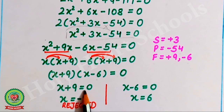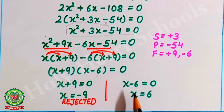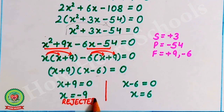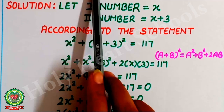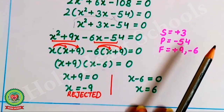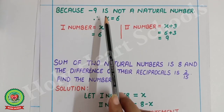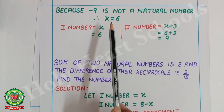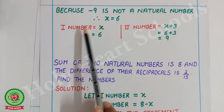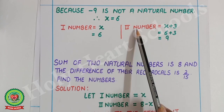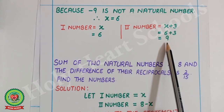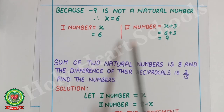So (x plus 9)(x minus 6) equals 0, giving x equals minus 9 or x equals 6. The value minus 9 is rejected because the question asks for natural numbers, which are positive. Therefore x equals 6. The first number is 6 and the second number is x plus 3 equals 6 plus 3 equals 9.